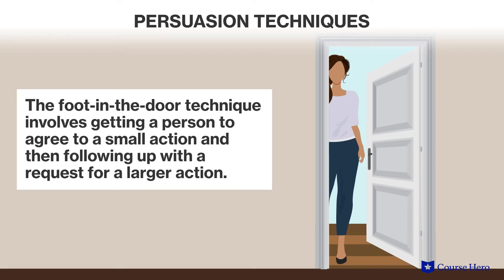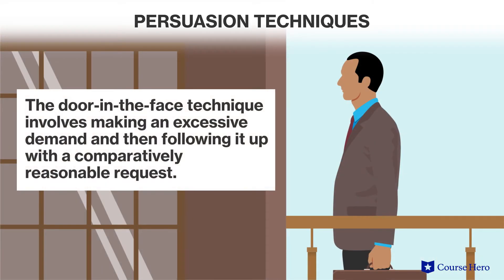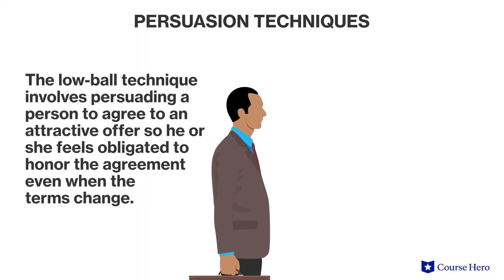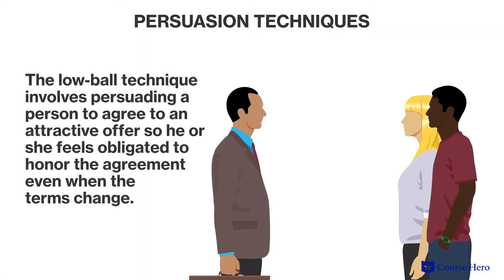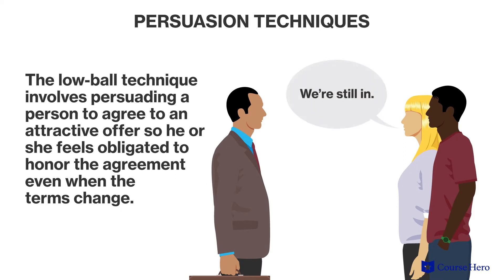In marketing, effective sales and persuasion techniques use social psychology principles to influence people's choices. For example, the foot-in-the-door technique is where the persuader gets a person to agree to a small action and then follows up with a request for a larger action. The opposite strategy is the door-in-the-face technique, in which the persuader makes an excessive demand and then follows it up with a comparatively reasonable request. Another technique is the lowball technique, in which a person is persuaded to agree to an attractive offer and then feels obligated to honor the agreement even when the terms change.